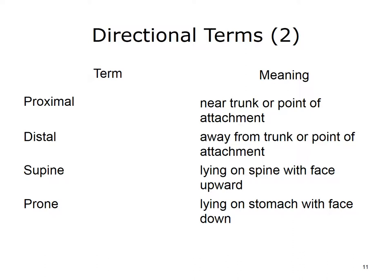Additional directional terms include proximal, which means located near the trunk or point of attachment to the body. Distal means located away from the trunk or point of attachment. Supine refers to the body's position when lying on your spine with your face pointing upward. Prone, on the other hand, refers to lying on your stomach with your face pointing down.